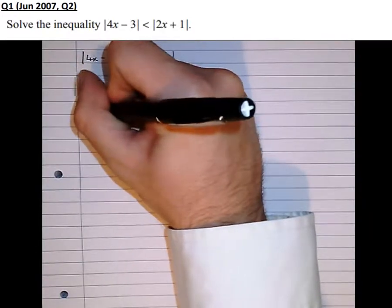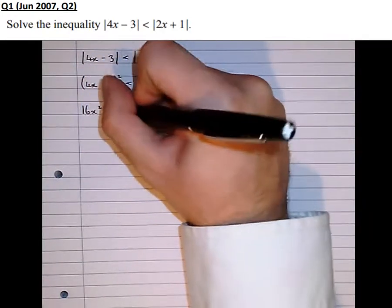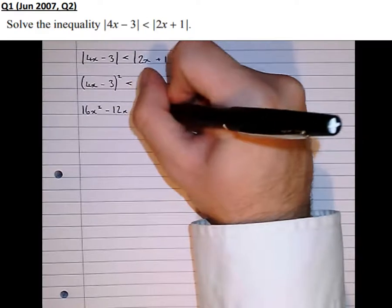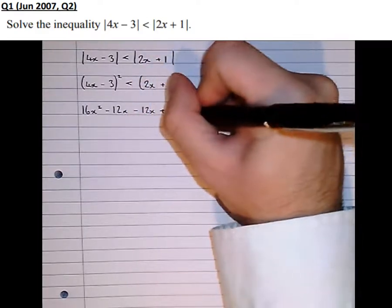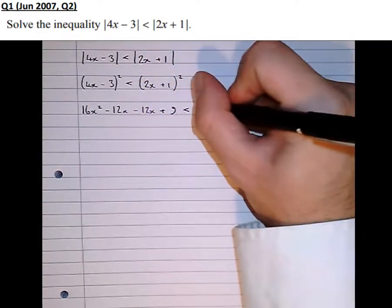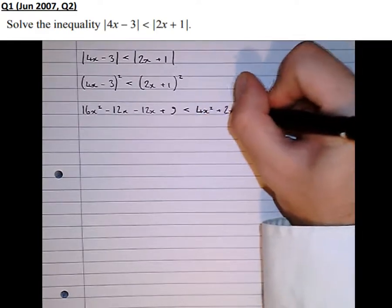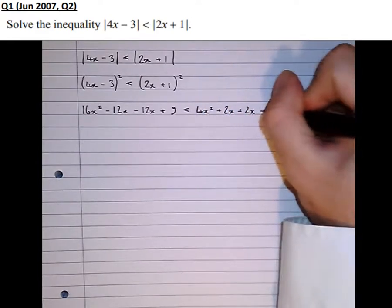We get 16x squared minus 12x minus 12x plus 9 is less than 4x squared plus 2x plus 2x plus 1.